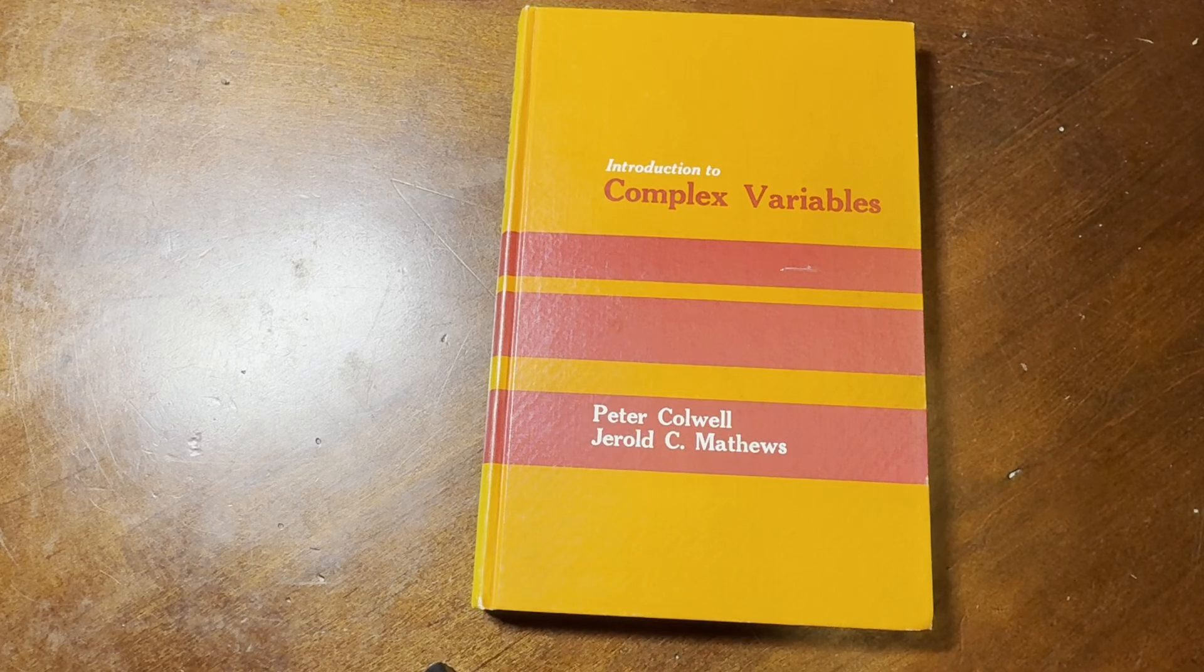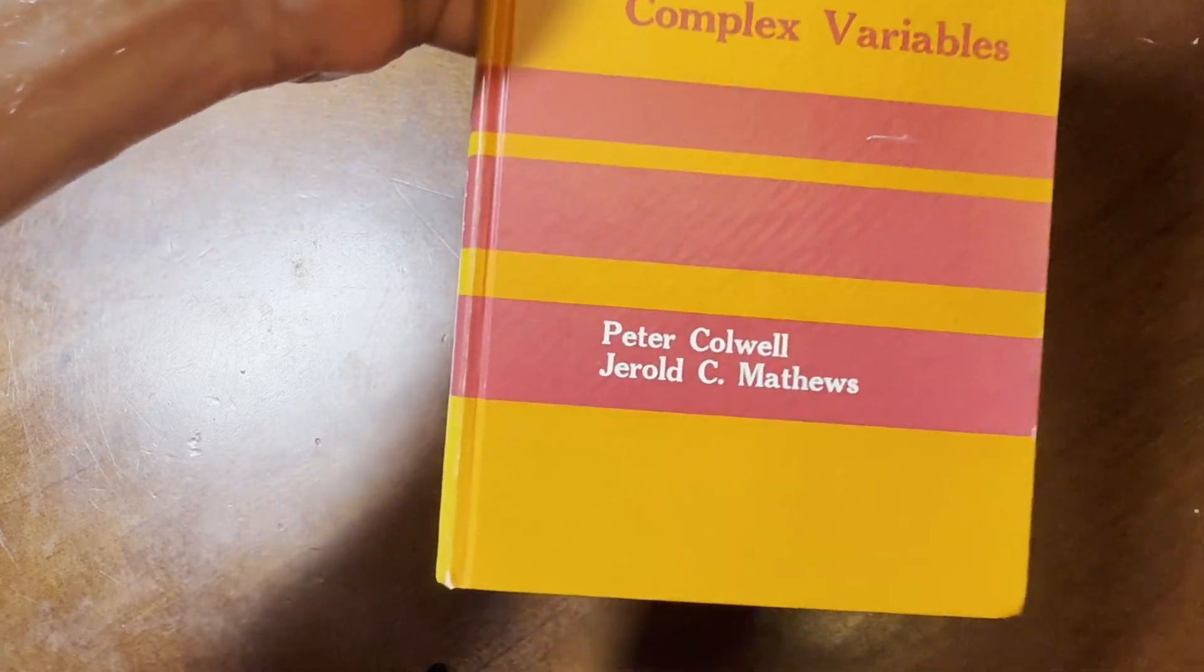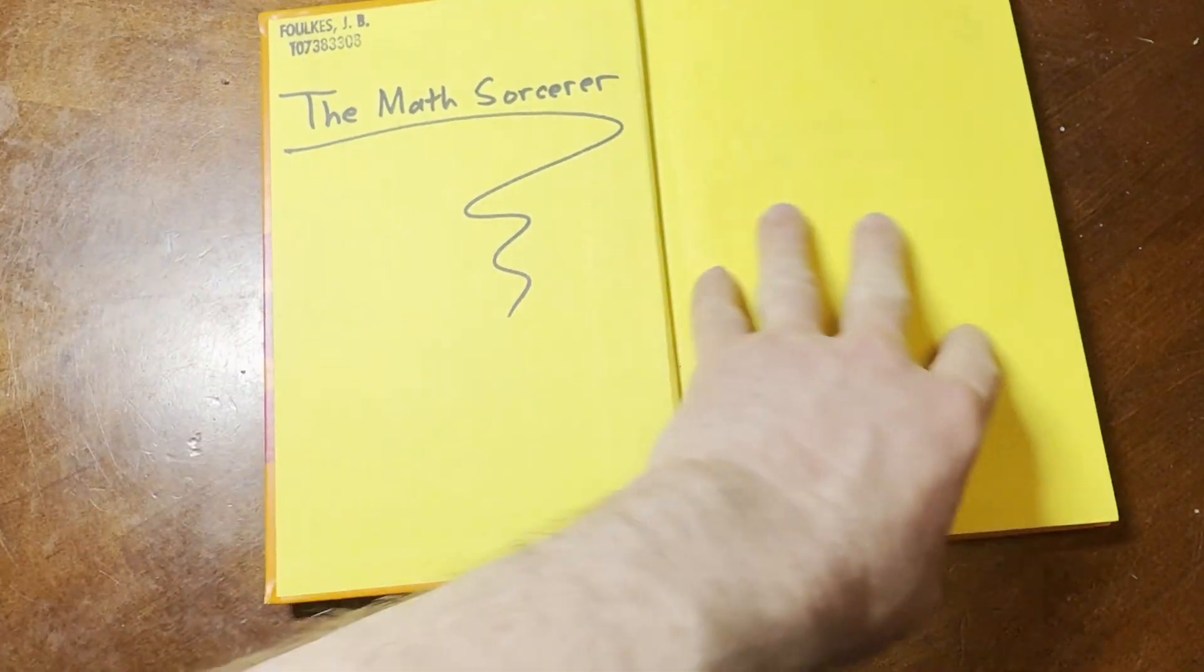Hi everyone. In this short video, I want to show you this book. It is called Introduction to Complex Variables and it was written by Caldwell and Matthews and it's got a really cool cover. I'm going to give it a whiff here to give you my opinion on the scent. Oh yeah, pretty good scent. It's all yellow on the inside. I love that.